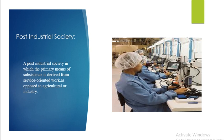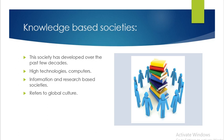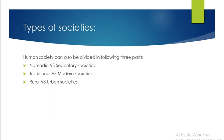Post-industrial society is our present society, in which a primary means of subsistence is derived from service-oriented work as opposed to agriculture or industry. It means that we have advanced technologies and a knowledge-based society. After agriculture and industrial societies, our society became post-industrial. This society has developed over the past few decades and includes higher technologies, computers, information and research-based activities, and globalization.